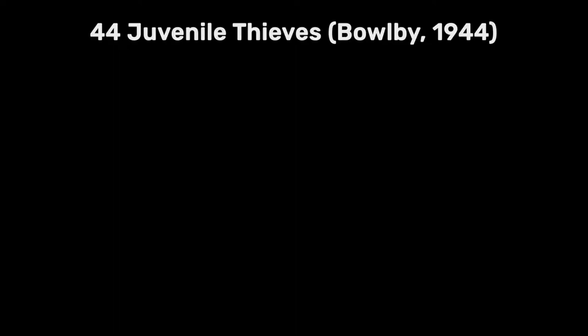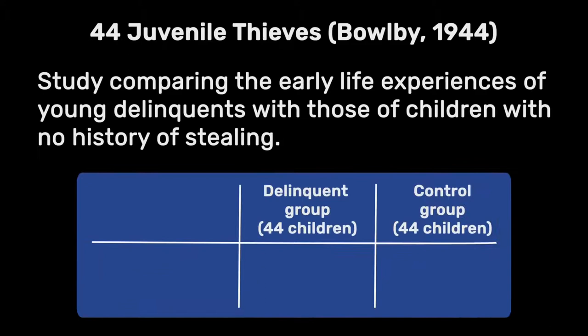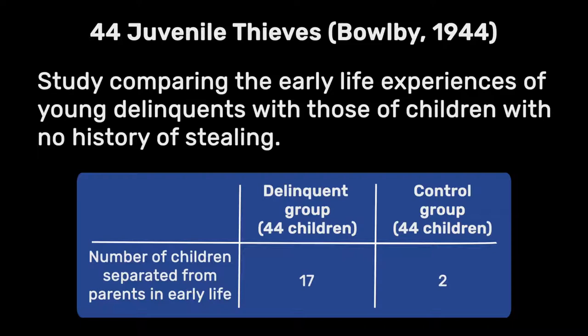This got him thinking about other things as well. He was working in a clinic at the time, and this study has come to be known as the 44 Juvenile Thieves. He took a sample of 44 children who had a history of stealing and compared them with 44 children also being seen at the clinic but not involved in any stealing. He took extensive histories and found that of the 44 thieves, 17 had prolonged periods of separation from their parents before the age of five, which didn't seem to be the case with the other children. This got him thinking there must be something really special about the relationship between a child and their caregiver, and perhaps there is a critical period before the age of five that was pivotal in why these children were becoming delinquent.